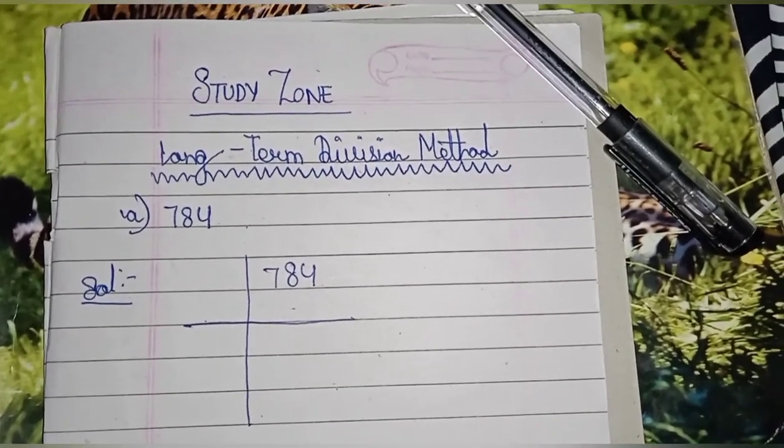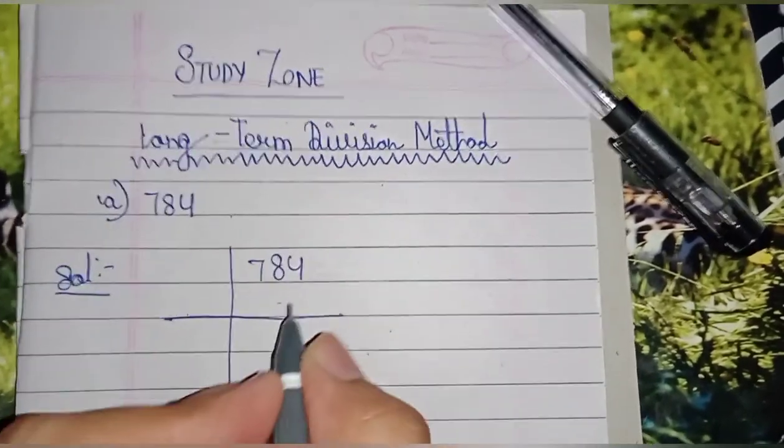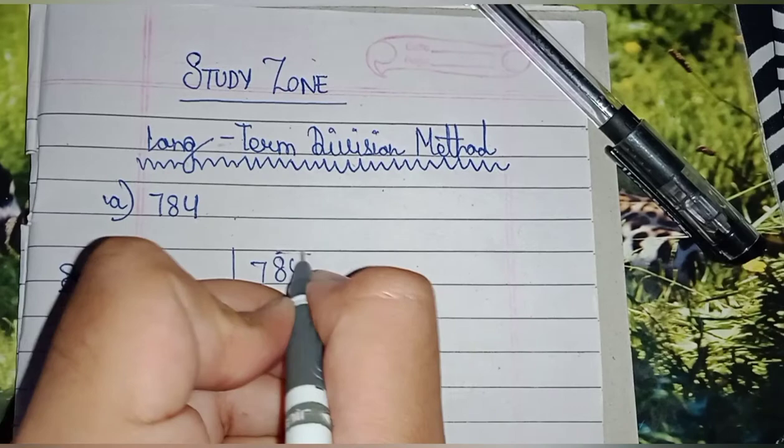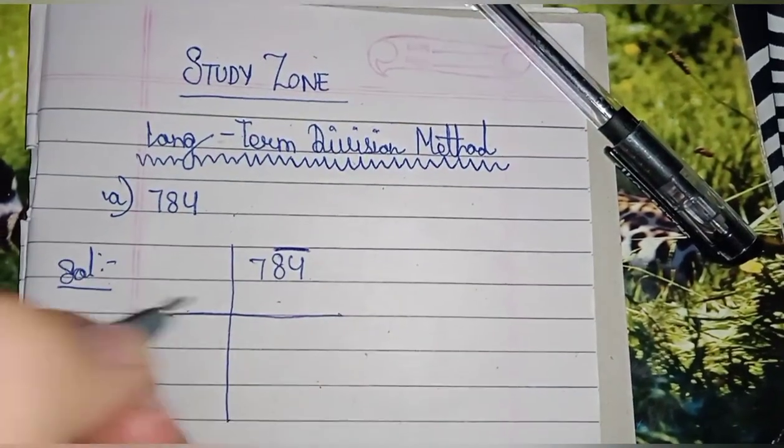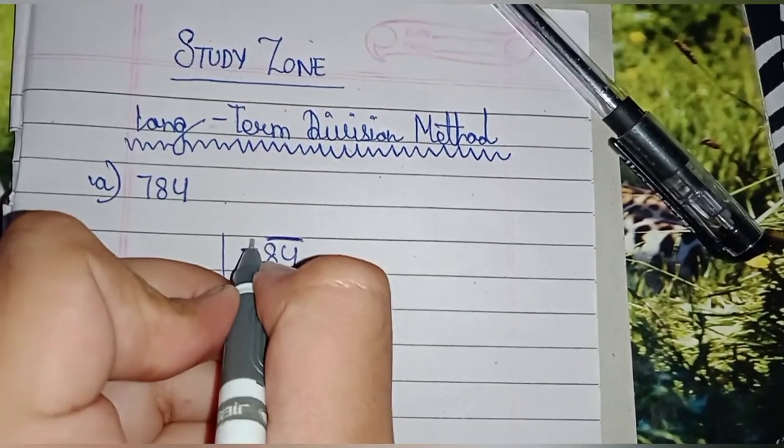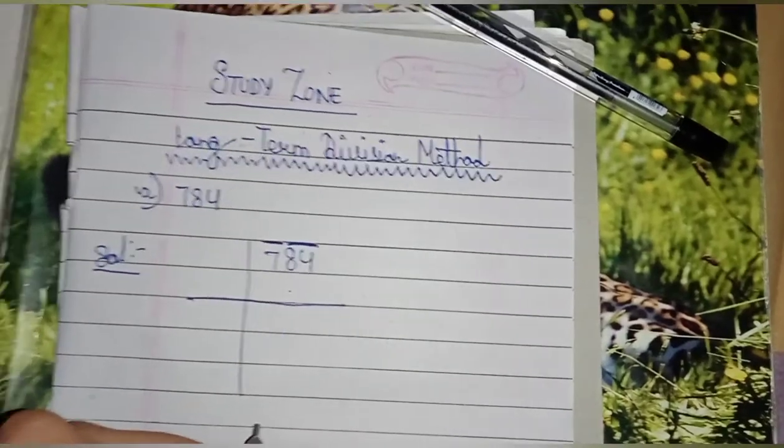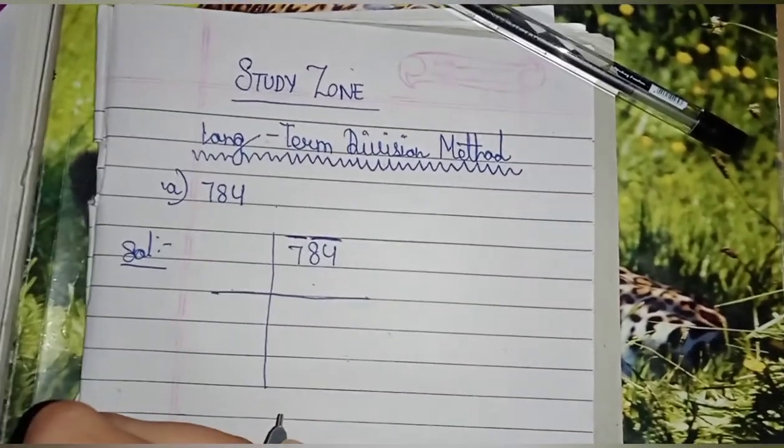For example, here 784: 84 is one pair, one period, and 7 which is alone is another period. Now you have to think of the largest number whose square is equal to or just less than the first period.